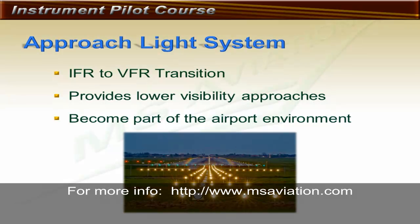Most runways served by instrument approach procedures have approach light systems, which allow the pilot to transition from instrument flight to visual flight more easily. Straight-in approaches to runways with approach light systems allow for lower visibility requirements, becoming part of the runway environment. This means you can descend from the decision altitude to 100 feet above touchdown zone elevation when you have the required in-flight visibility and the approach light system in view. Approach light systems were covered previously in lesson 13.